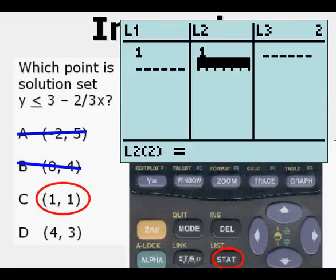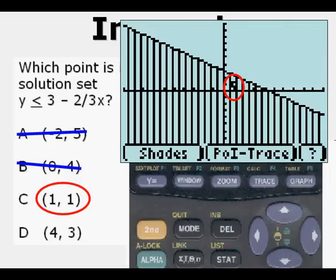Next, we go back to stat edit. Put in 1 comma 1. We graph it. And we see that that point is within the shaded area. And so that point is part of the solution set. We choose that as the correct answer.